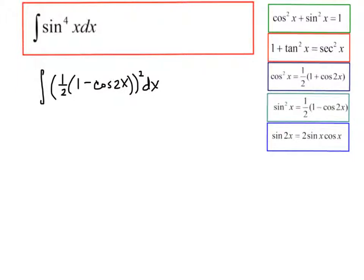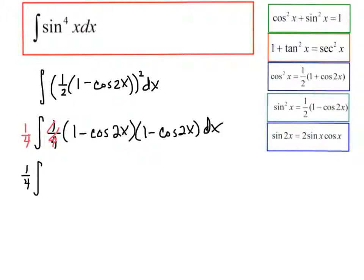Now, I could rewrite this as one-fourth, and then one minus cosine two x, times one minus cosine two x. I could pull that one-fourth out front. I could multiply this thing actually out, get one-fourth the integral of one minus two cosine two x, plus cosine squared of two x.